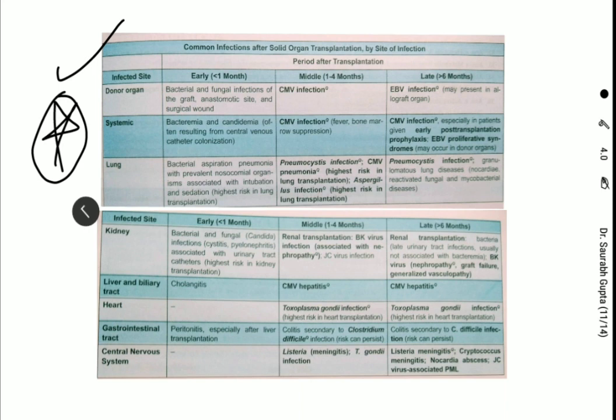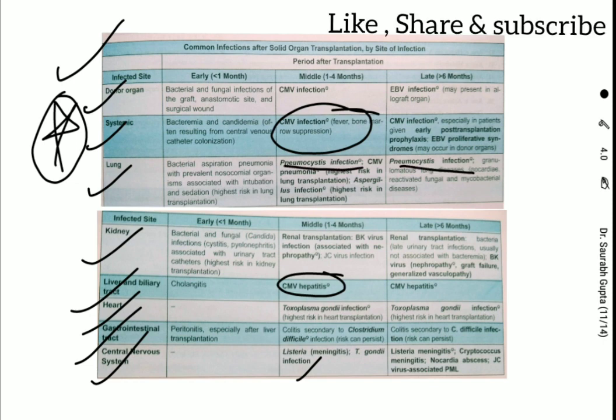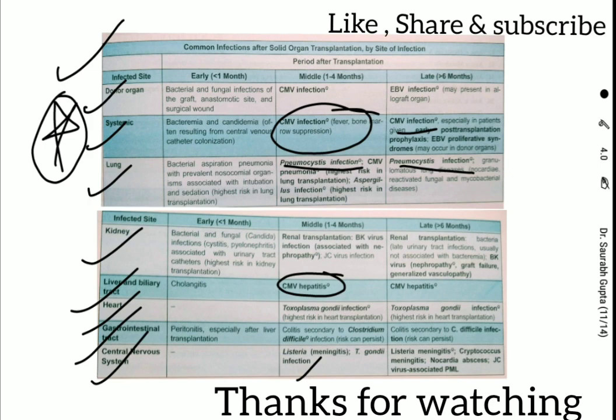There is an important table covering systemic effects and organ-specific involvement — lung, kidney, liver, heart, GI tract, and CNS — which are most commonly affected after solid organ transplantation. CMV infection is the most common cause across all these systems. Other pathogens include Listeria and Pneumocystis. This entire table is very important to learn.